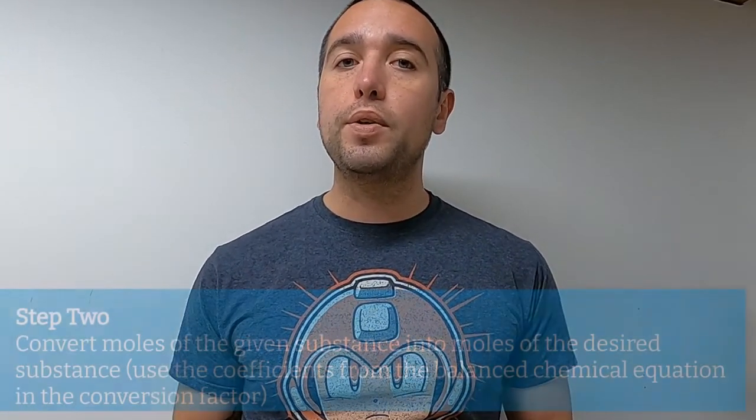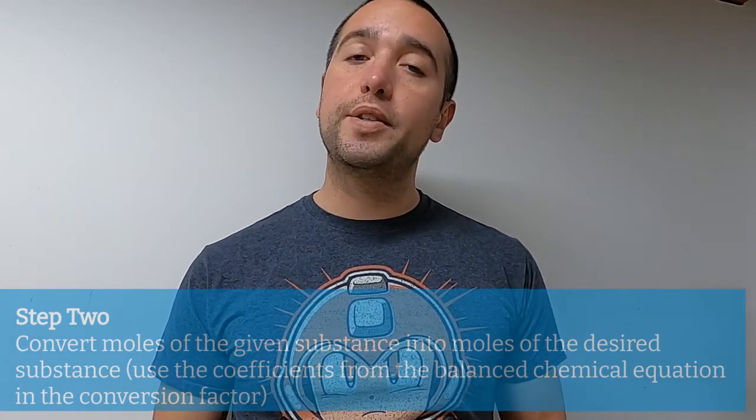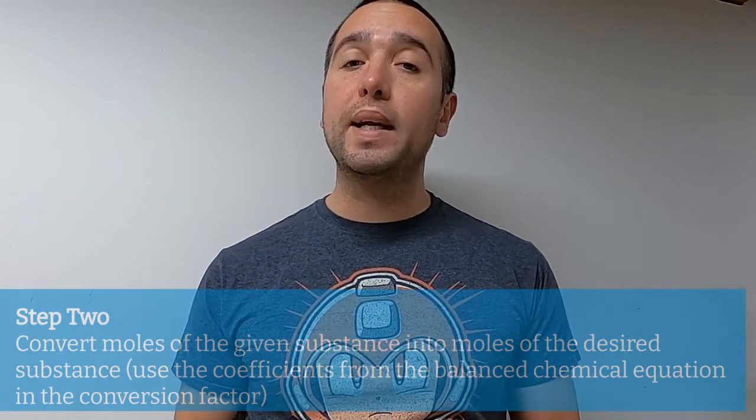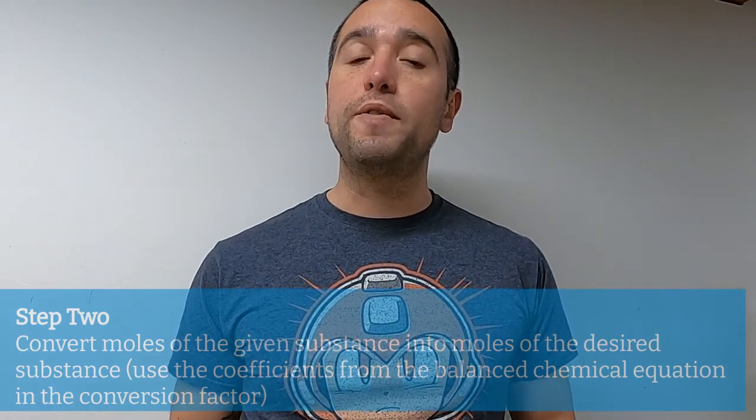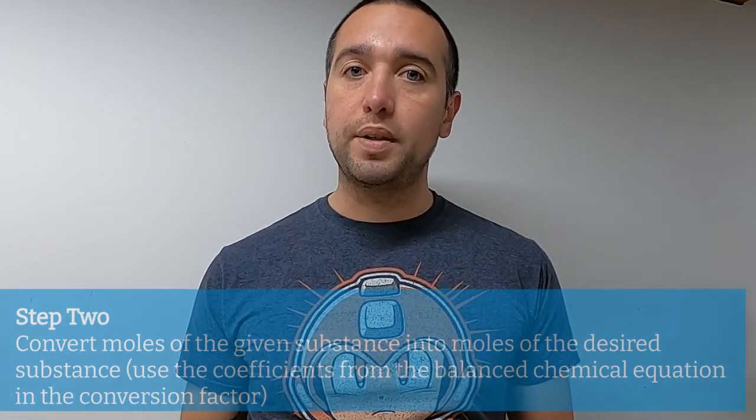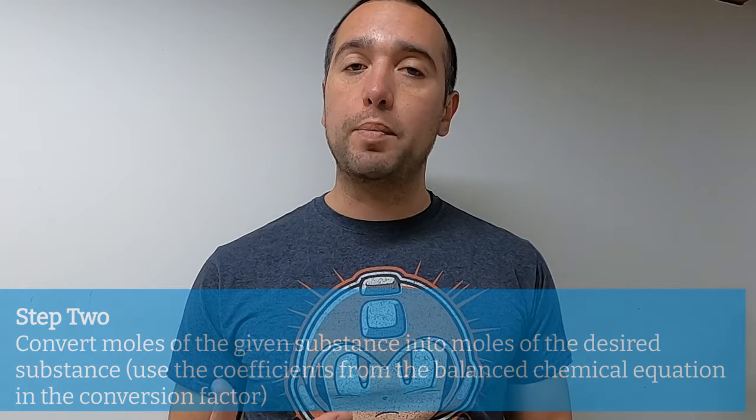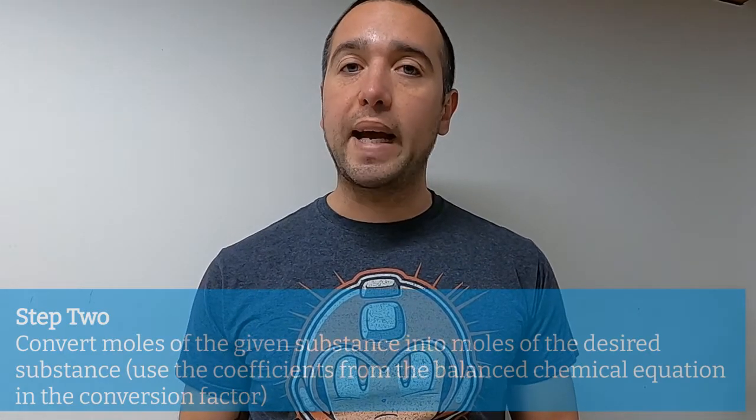Now that you've got moles of your given substance, you're going to convert that into moles of your desired substance. And the way you're going to do that will be using the coefficients from the balanced chemical equation. And those are ratios between moles of substances in the reaction.